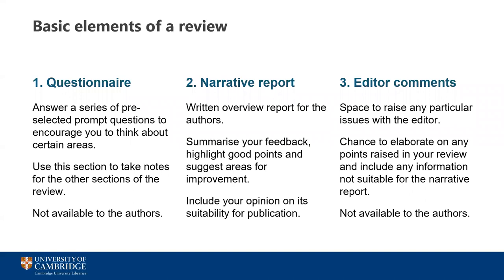Depending on the publisher, there are usually three main elements to a review: a questionnaire form, a narrative report, and confidential comments to the editor. In the questionnaire section, some will have a form with many questions to fill out while others will have a single box for comments. You can use these boxes to record your thoughts about certain areas following prompts that are given, and use them almost as a notes field to remind yourself of the key points for your review. Sometimes questions will have prompts to remind you exactly what the journal is looking for. Make sure you find out which parts of your review will go straight through to the authors to avoid any problems — the questionnaire section usually isn't visible to the authors, but you don't want to make any embarrassing mistakes.